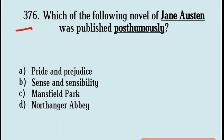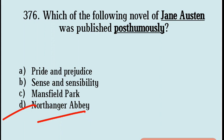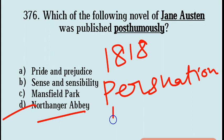Question No. 376: Which of the following novels of Jane Austen was published posthumously? Options are Pride and Prejudice, Sense and Sensibility, Mansfield Park, Northanger Abbey. Correct answer: Option D, Northanger Abbey, published 1818. Another novel, Persuasion, was also published posthumously in 1818.